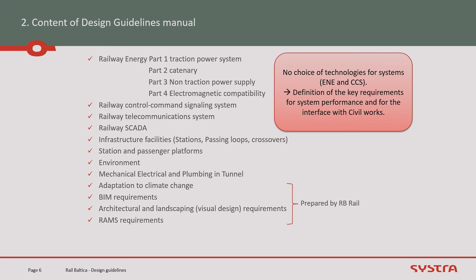We have additional tomes: one for energy, where we define the traction, catenary, non-traction, and EMC. We have also defined control command, telecommunications, SCADA, and infrastructure facilities — typical sketches for infrastructure facilities in the station, passing loop, and crossover. Then station and passenger platforms, environment, MEP and tunnel. There are four additional tomes not prepared by Systra but by Arup Rail: adaptation to climate change, beam requirements, architecture and landscaping, and ramps.